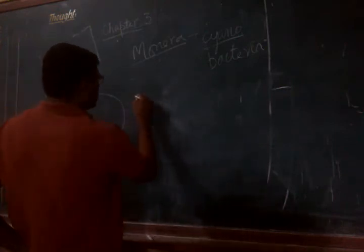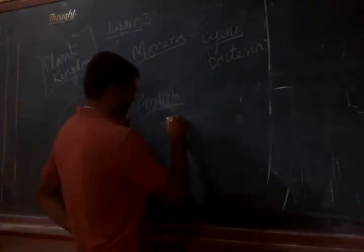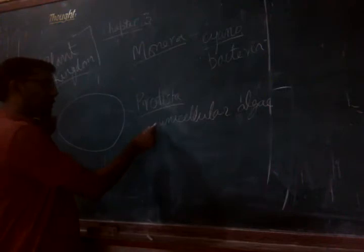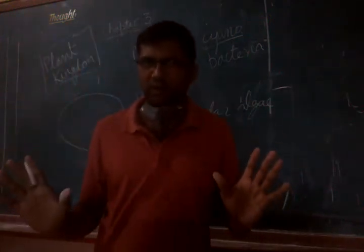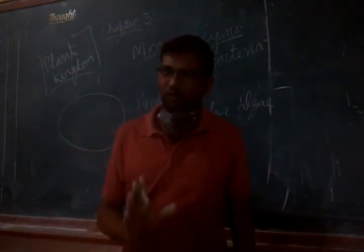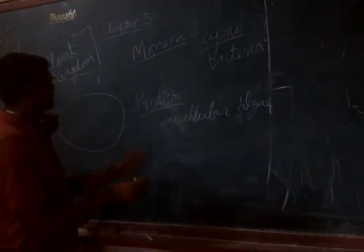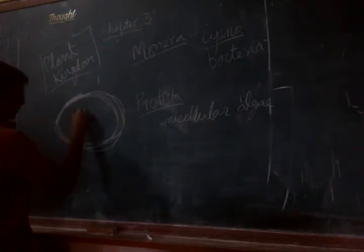Similarly, many members of kingdom Protista — for example, unicellular eukaryotes like Chlamydomonas — are now placed in kingdom Protista, because all eukaryotic unicellular organisms are placed in kingdom Protista. Earlier, all algae — that means all organisms capable of doing photosynthesis and making their own food — were placed under kingdom Plantae. The basic criterion for placing an organism into Plantae was the presence of a cellulose cell wall and the capability to do photosynthesis. This was the old system.